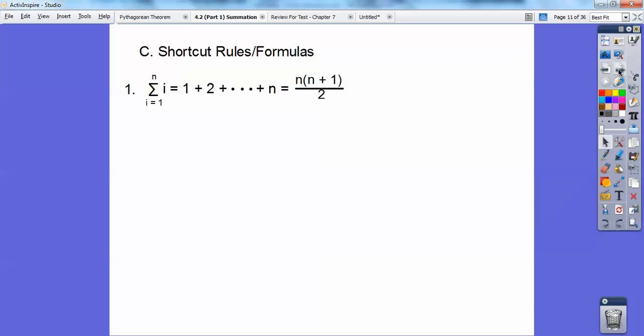And here's some shortcut rules. The summation of i equal 1 to n of i is just this formula, n times n plus 1 over 2.